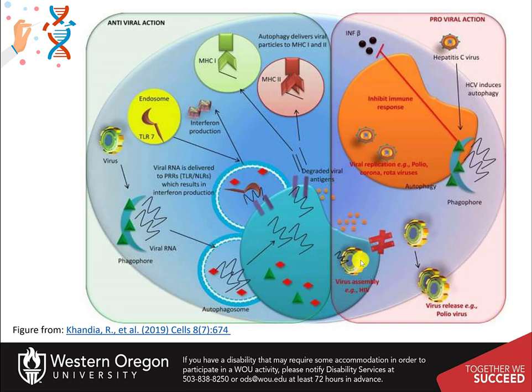For example, during poliovirus infection, vesicle acidification, which can mature autophagosomes, has been shown to induce the maturation of virions into infectious particles. HCV, on the other hand, can derail the autophagy process, causing it to impair the innate immune response of the host.